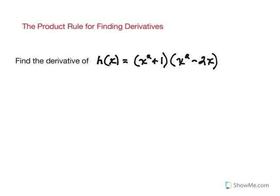Let's look at a couple of examples of how to use the product rule for finding derivatives. Suppose we have the function h(x) equals x squared plus 1 times the quantity x squared minus 2x.